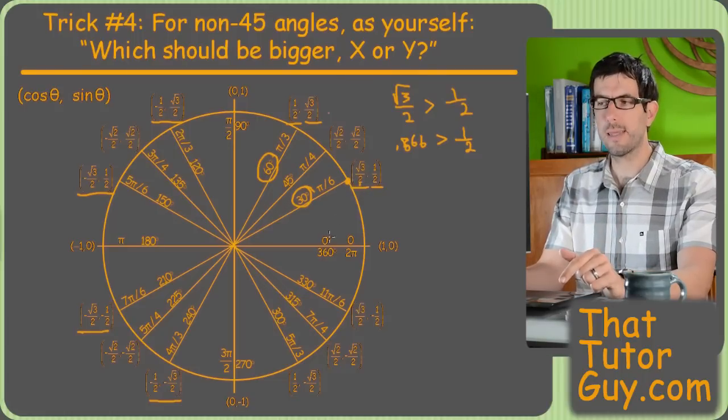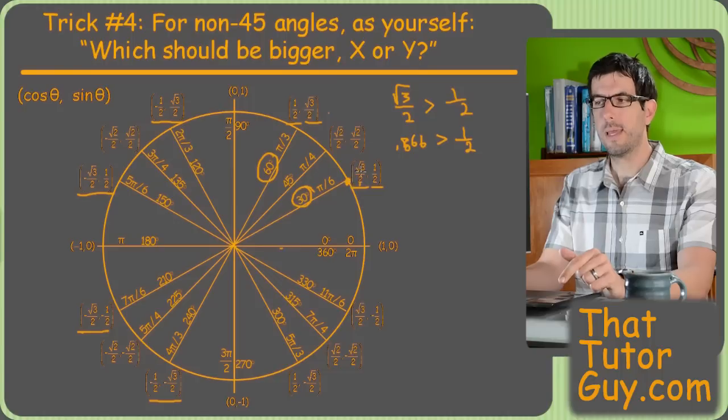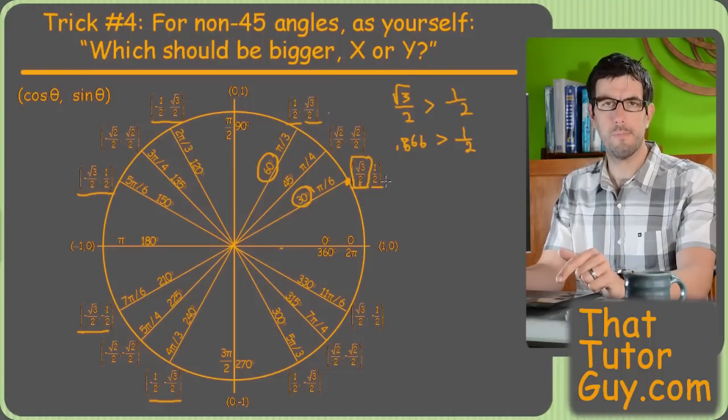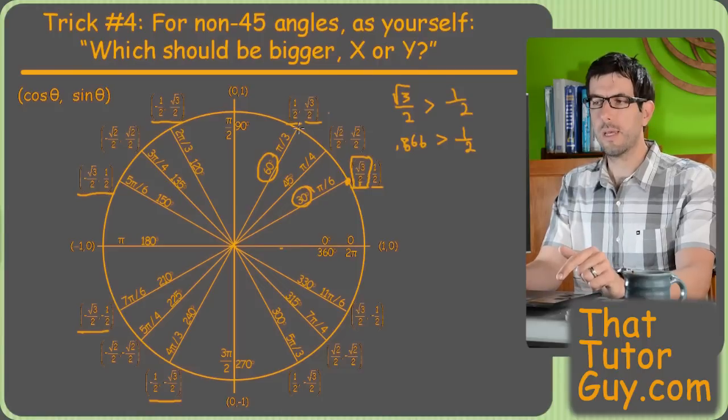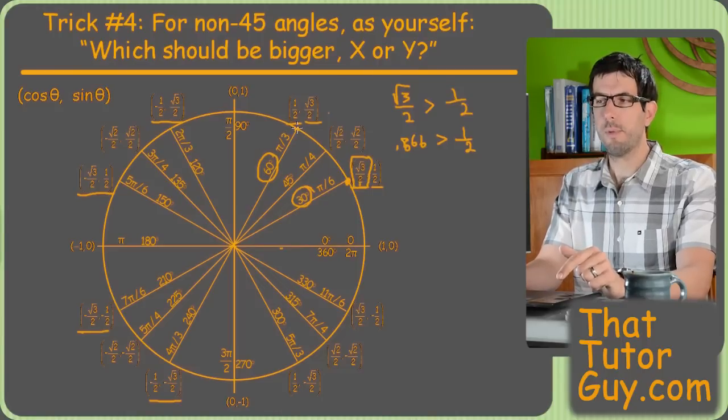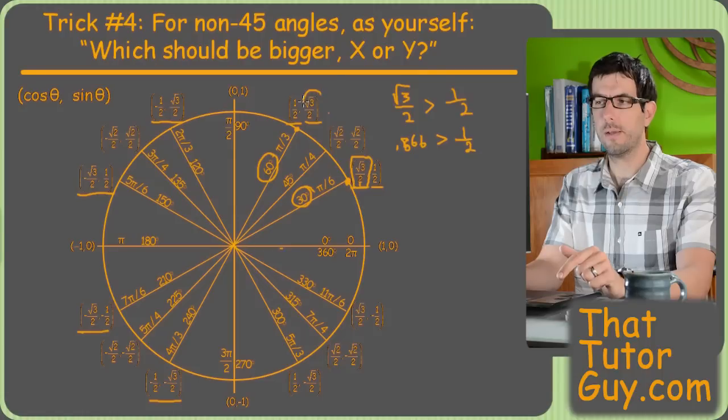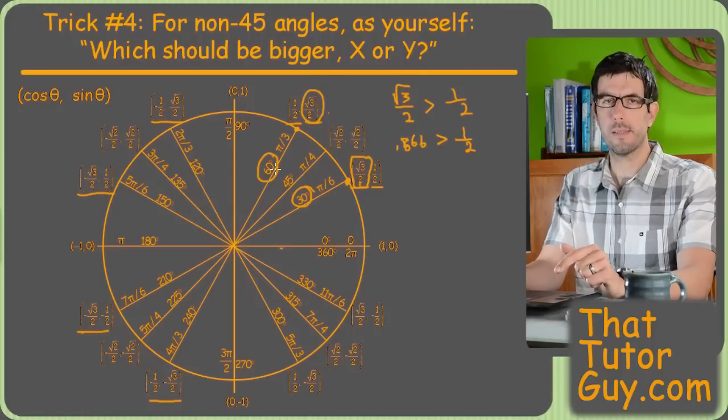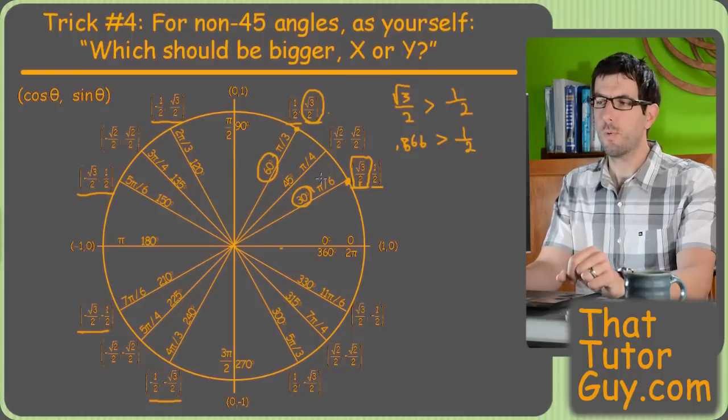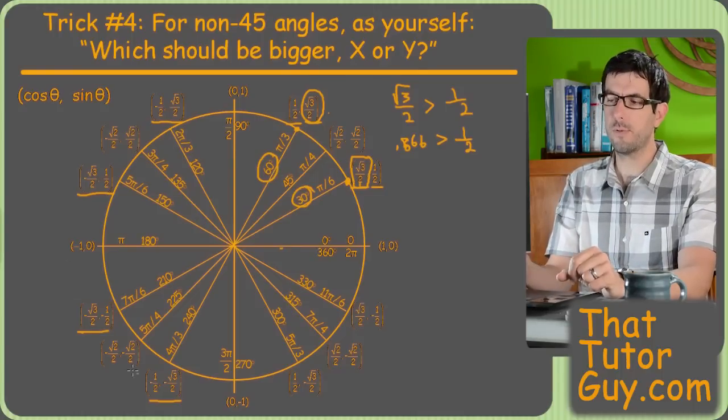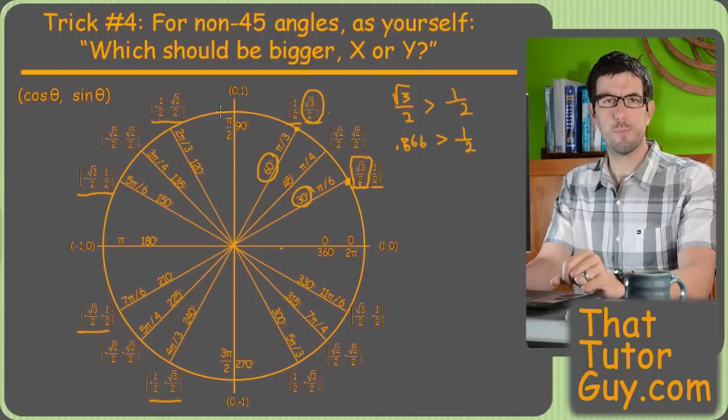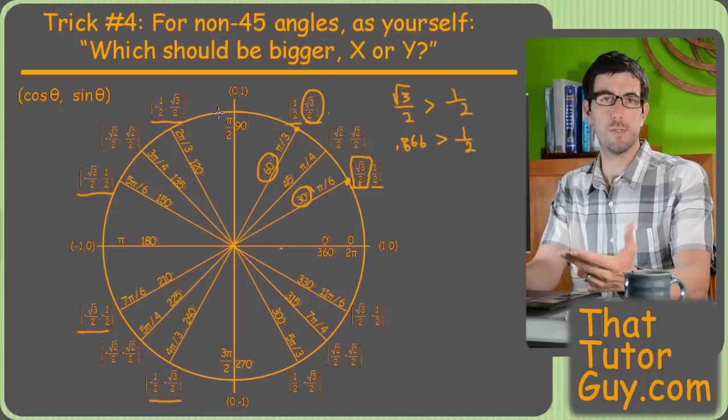For example, at thirty degrees, it looks like the x-coordinate would be bigger. And sure enough, it is. So that means that the cosine of thirty must be the square root of three over two. But if you look at sixty degrees, we're now much closer to the y-axis than the x-axis. So our y-coordinate is bigger. Which means it's the sine of sixty that is square root of three over two. And the other one, of course, is one-half. Once you know that, you can go all the way around the circle doing the same thing. And then, of course, just put in your pluses and minuses based on all students take calculus.